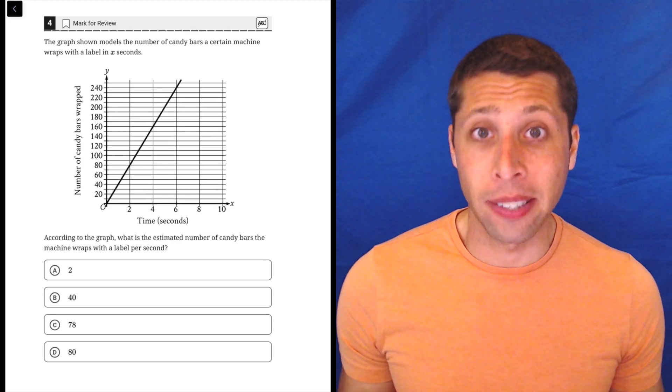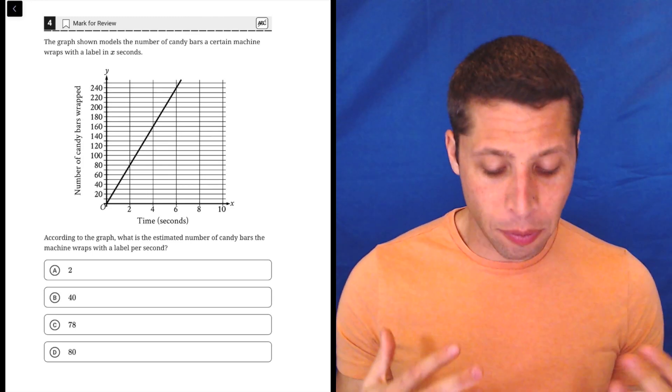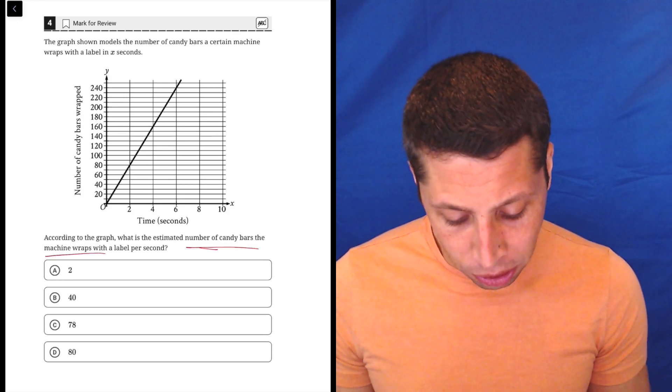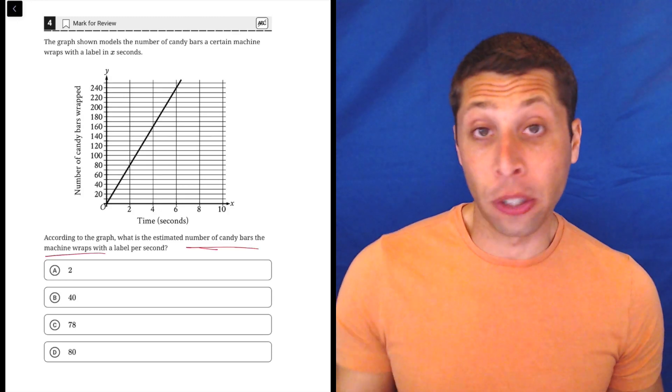Here we're being asked about the point, basically. So they're giving this graph about the candy bars, and they're asking for what is the estimated number of candy bars the machine wraps with a label per second.